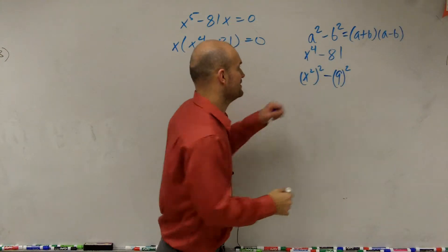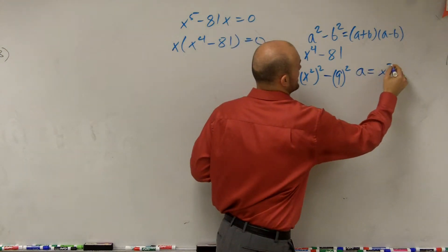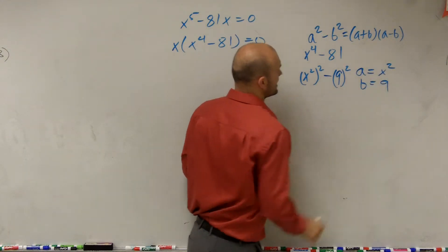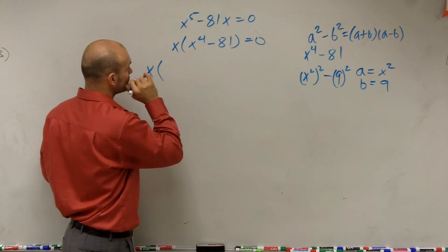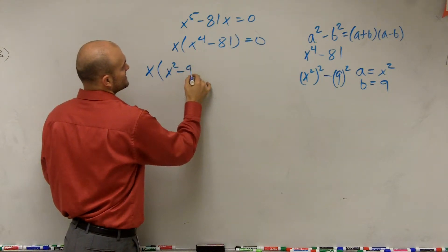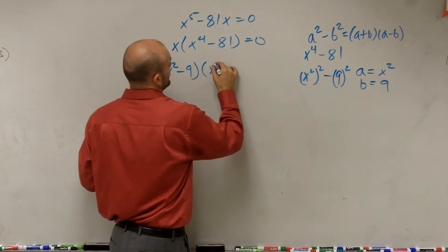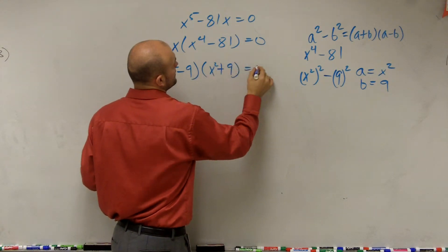Well therefore, my a in this case is x squared, and b equals 9. So therefore I can factor this to x times x squared minus 9 times x squared plus 9 equals 0.